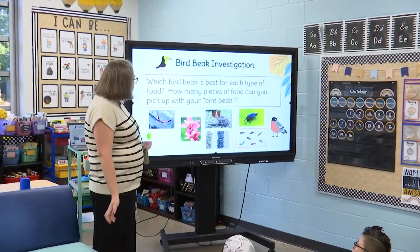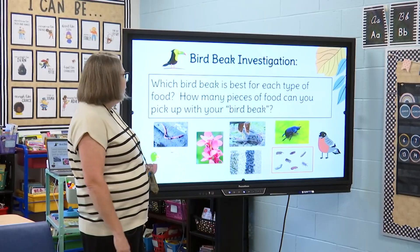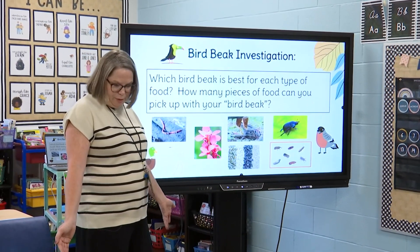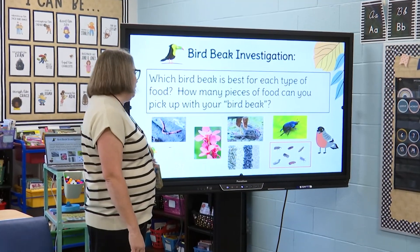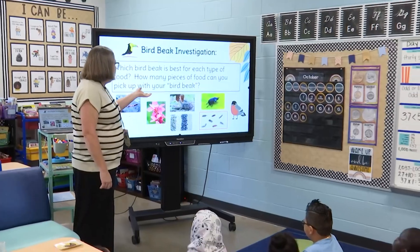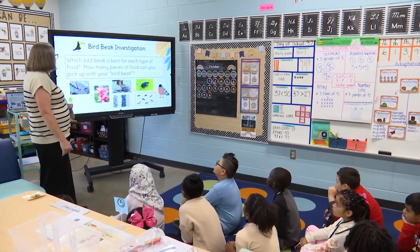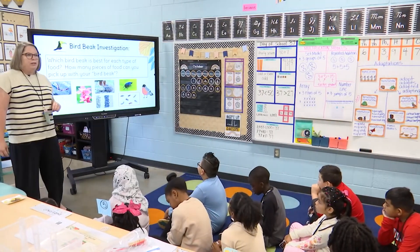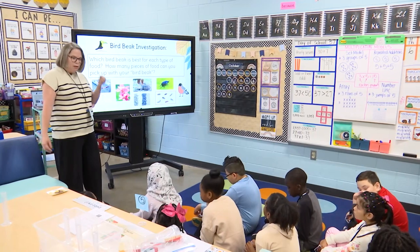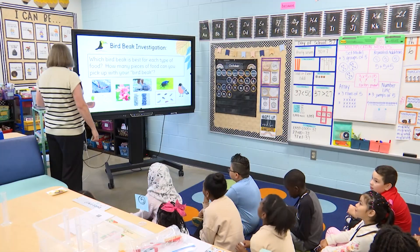Here's the question that we're going to be exploring today: which bird beak is best for each type of food? Because we know that birds eat all kinds of different things — some of them eat worms, some eat seeds or insects or beetles, and some eat other birds and animals because we know some are birds of prey. So we're going to be exploring which beak works best for each type of food, doing an investigation in our small groups.